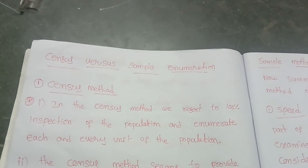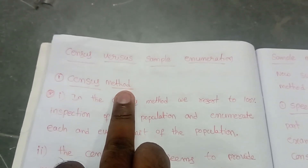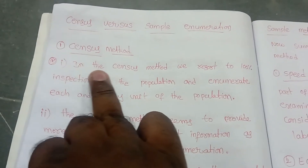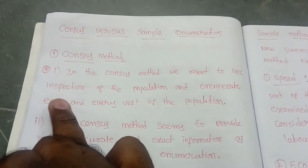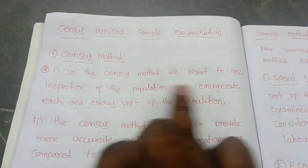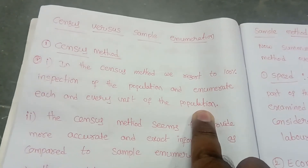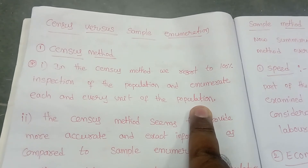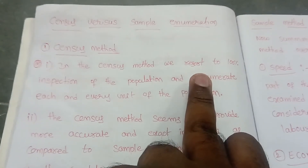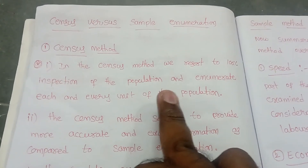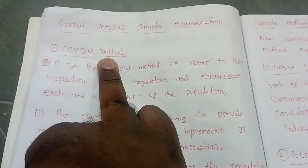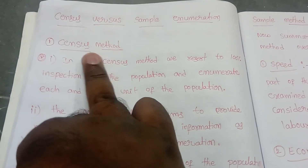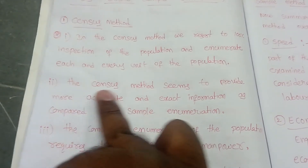Next we go to census versus sample enumeration. First, the census method: in the census method we do 100 percent inspection of the population and enumerate each and every unit of the population. If 100 percent of the population is available, we go for the census method — for example, if every student is present and I am calculating your class average percentage.